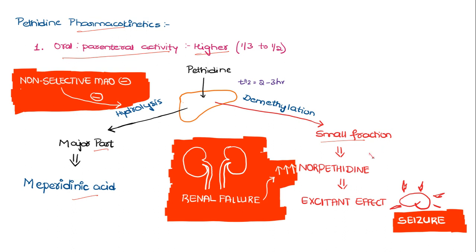The importance of the smaller fraction norpethidine is that it is excitatory in action — it produces excitatory effects thereby increasing the risk of seizures. When patients are on a non-selective MAO inhibitor, hydrolysis is inhibited, so more norpethidine accumulates, leading to increased excitatory action and increased risk of seizures. Similarly, in renal failure, there is increased accumulation of norpethidine, also increasing seizure risk. The half-life is around 2 to 3 hours.